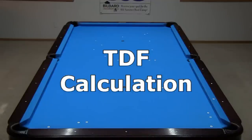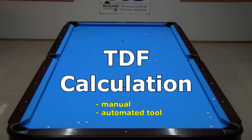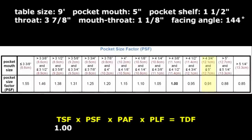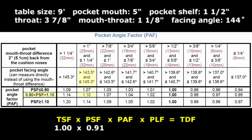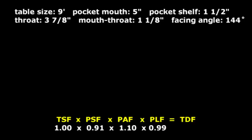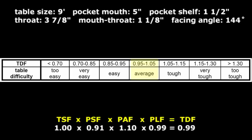With table size and pocket geometry information, the TDF can be calculated either manually by looking up numbers in the TDF tables or automatically using a spreadsheet or online calculator. A standard 9-foot table has a table size factor of 1. A 5-inch pocket has a pocket size factor of 0.91. A 144-degree facing angle with a pocket size factor between 0.9 and 1.1 has a pocket angle factor of 1.1. And a 1.5-inch shelf depth with a pocket angle factor greater than or equal to 1.1 has a pocket shelf factor of 0.99. Multiplying the four factors gives the overall table difficulty factor. The TDF for this table is 0.99, which is considered average.